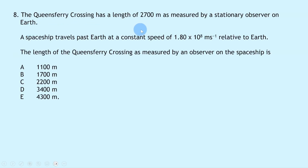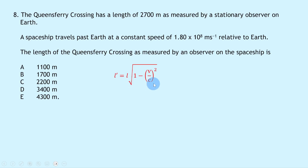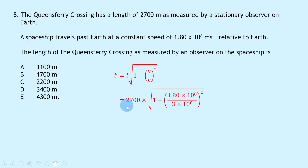Question 8 says the Queensferry Crossing has a length of 2700 metres as measured by a stationary observer on Earth. A spaceship travels past at 1.80 × 10⁸ m/s. This is a length contraction question: L' = L × √(1 − (v/c)²). The proper length L = 2700 m. Substituting: L' = 2700 × √(1 − (1.80 × 10⁸ / 3 × 10⁸)²) = 2200 metres, which is answer C.